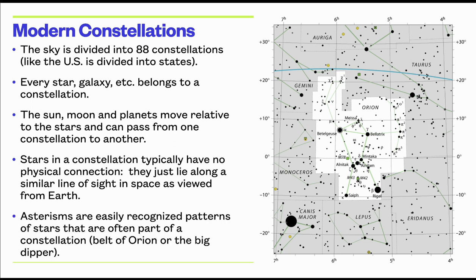The term asterism refers to patterns of stars that are easily recognizable. For example, Orion's belt really stands out in the night sky, so Orion's belt is an asterism — it's part of the constellation Orion, but it's not a constellation itself. The Big Dipper is also an asterism; it's part of the constellation Ursa Major, the Great Bear.